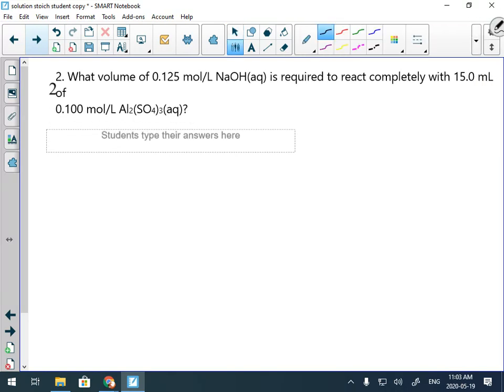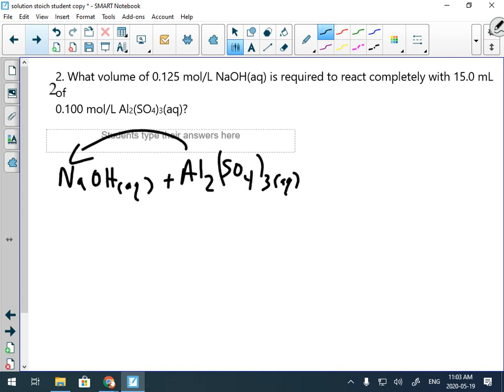All right, we got sodium hydroxide reacting with aluminum sulfate. Oh hey, this is not a neutralization—well, it maybe is, but it's not a classic neutralization because we're not going to make water. So the aluminums and the sodium switch place, so we get Al(OH)3, that's low solubility, and sodium sulfate, that's high solubility.